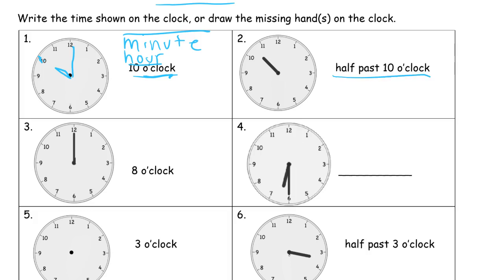Half past 10 o'clock — half past means we're thinking about half of the clock. Half of the minutes in that hour of 10 o'clock is 30 minutes, because there are 60 minutes in an hour. The hour hand is already drawn — it's not touching the numbers, it's halfway between the 10 and the 11. So we draw the minute hand down to the 6, because that's halfway around the clock.